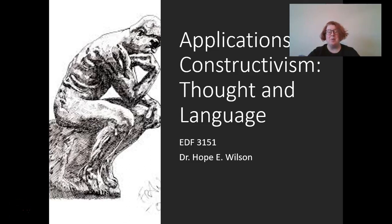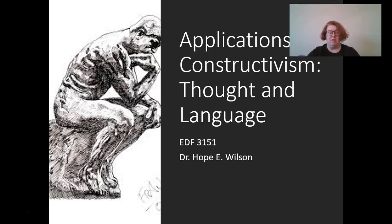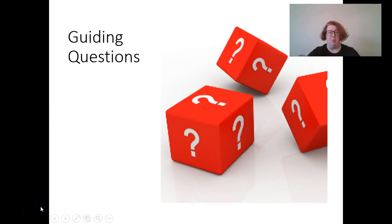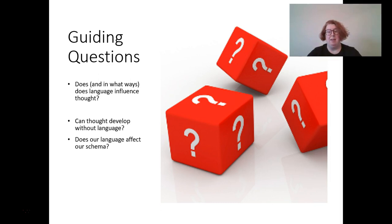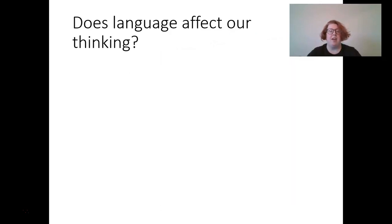Hi! Today we're going to extend what we've learned about social and cognitive constructivism and talk about applications — specifically about the relationship between thought and language, and how different theorists in constructivism have thought about that relationship. Our guiding questions are: does language influence thought, and in which ways? Can thought develop without language? And does our language affect our schema or understanding of the world?